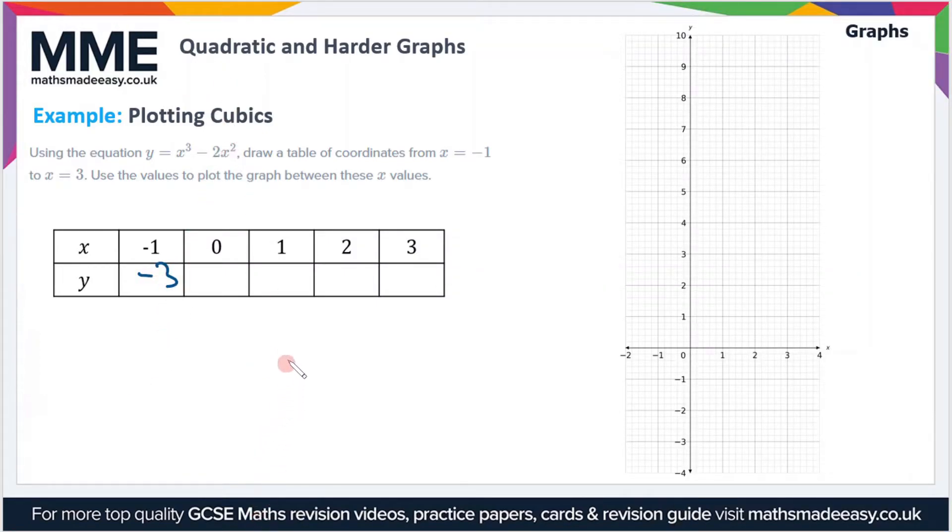I won't make you watch me put the other ones into the calculator. If you complete the table it should look like this: minus 3, 0, minus 1, 0, and 9. You just use the same process as before.